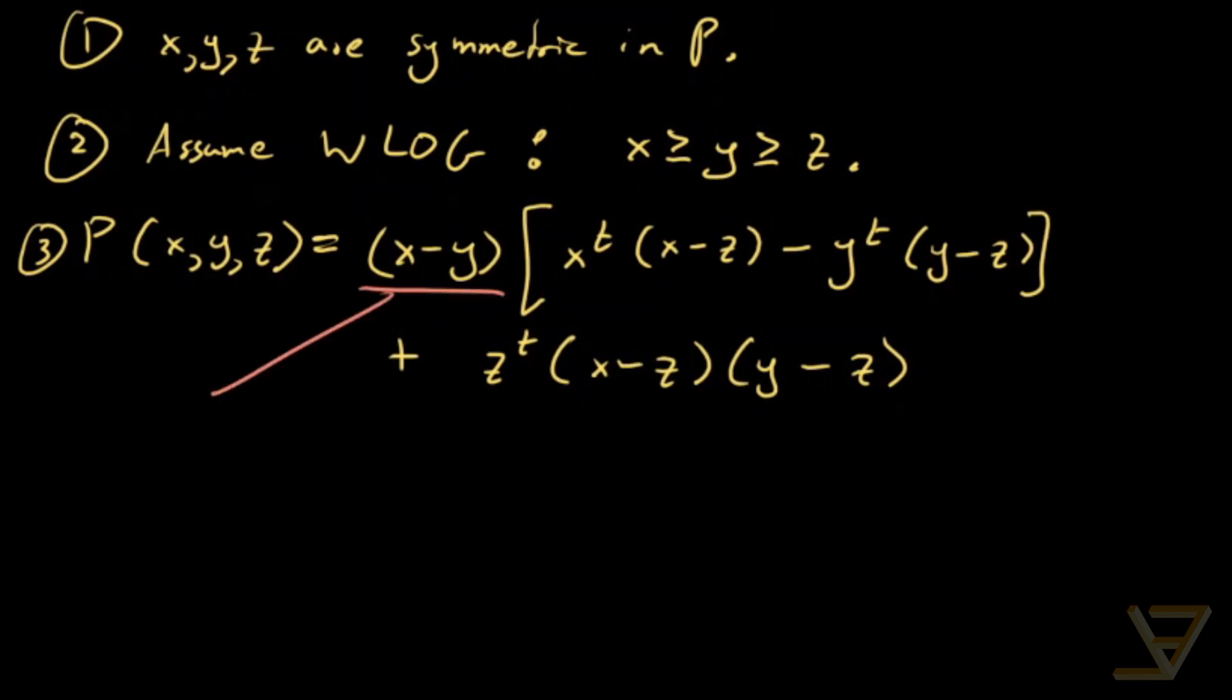And now it's more or less clear that this is in fact non-negative because this one is true, x ≥ y, and x^t ≥ y^t since x and y are both non-negative and t is a non-negative integer.